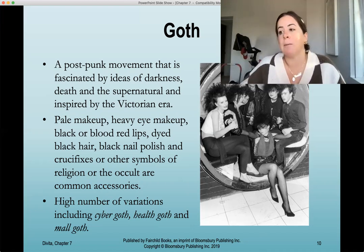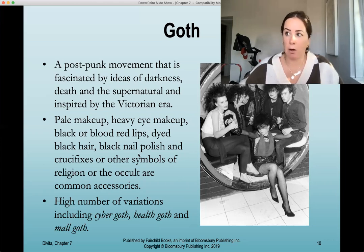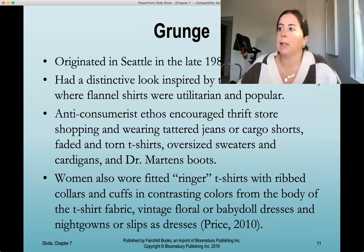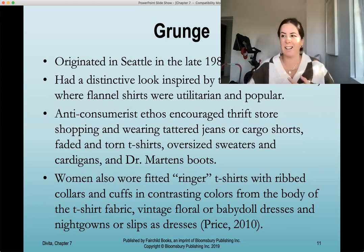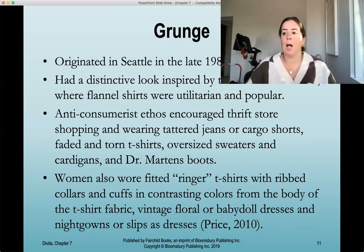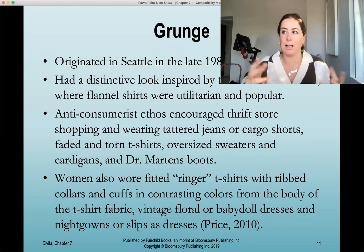Goth has a high number of variations including cyber goth, health goth, and mall goth, with many more emerging by 2022. Grunge originated in Seattle in the late 1980s with a distinctive look inspired by the Seattle climate, where flannel shirts were utilitarian and popular. An anti-consumerist ethos encouraged thrift store shopping, recycling, worn tattered jeans, cargo shorts, faded and torn t-shirts, oversized sweaters and cardigans, and Doc Martens boots. Women also wore fitted ringer t-shirts, vintage floral or baby doll dresses, and nightgowns as slips — think Nirvana and Courtney Love in that era.